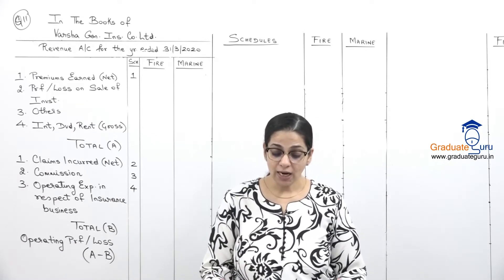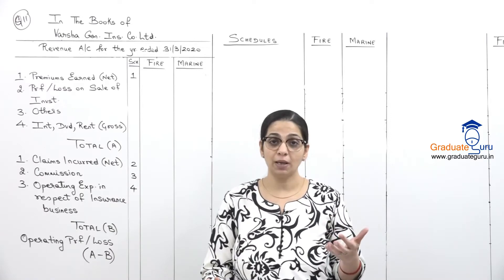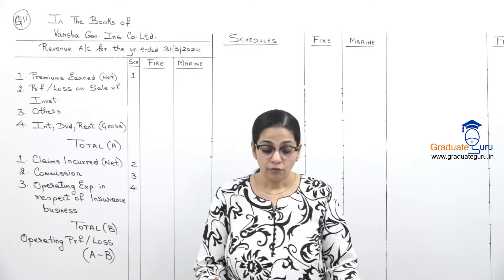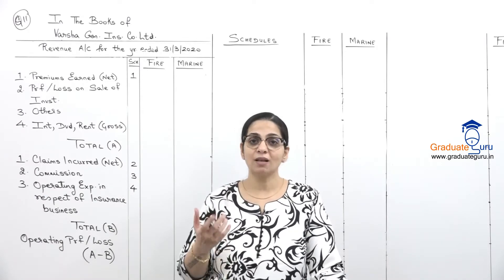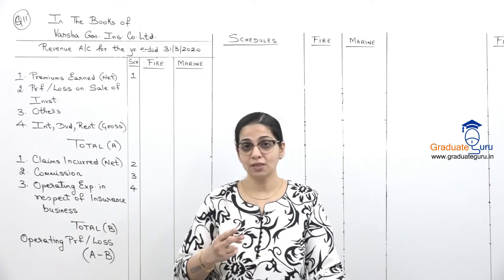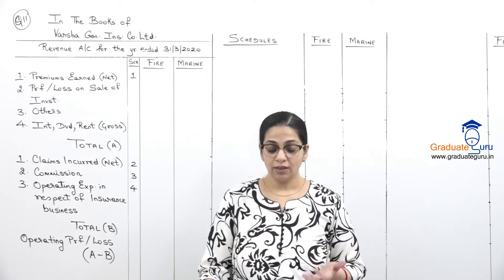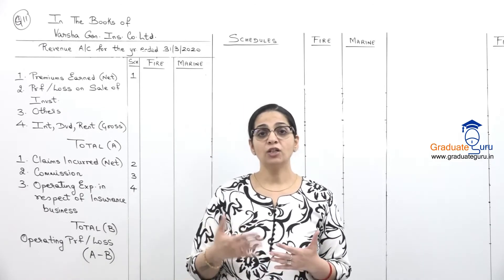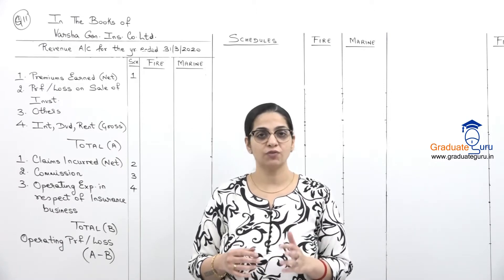Depreciation is given, interest and dividend received is given, difference in exchange credit. We had done something similar in the last sum, foreign exchange gain. So this is also other income or credit, which means it's a positive balance. Fire fund, marine fund, these are opening balances, First April balances. The fund is nothing but your unexpired risk reserve only.